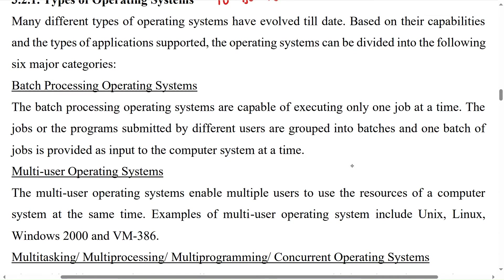First is the batch processing system. The batch processing operating system is capable of executing only one job at a time. The jobs or programs submitted by different users are grouped into batches, and one batch of jobs is provided as input to the computer system at a time.